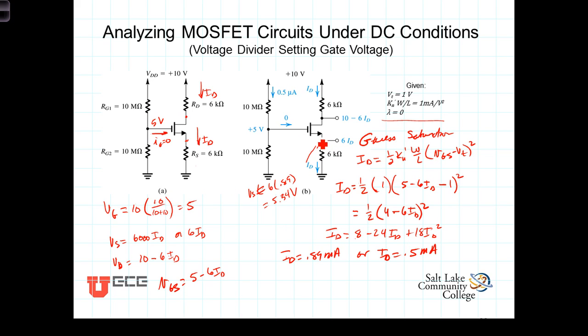that would suggest that V_GS would be 5 minus 5.34 volts. That would suggest that V_GS was a negative 0.34 volts. That doesn't make sense. If that was the case, this transistor wouldn't even be on and there wouldn't be any current flowing through it. So we can eliminate that option.